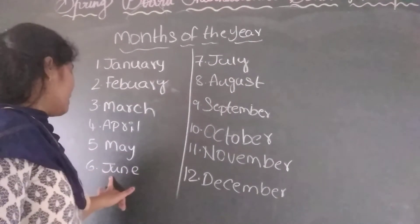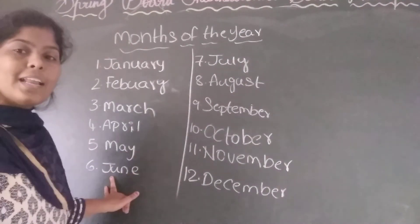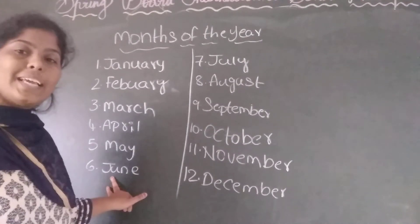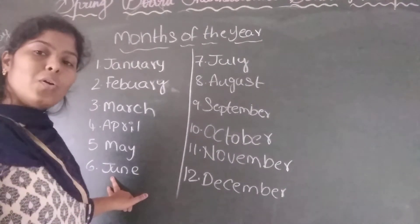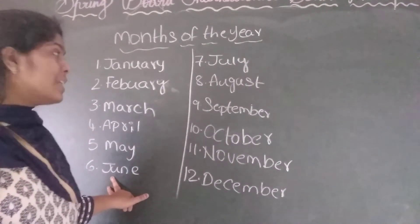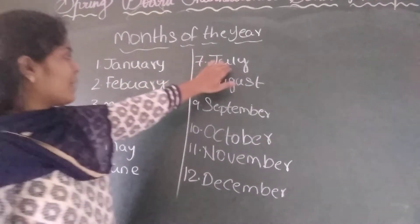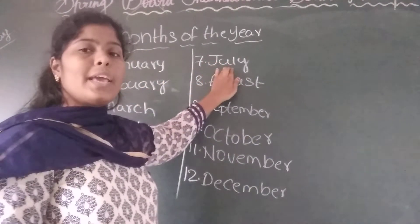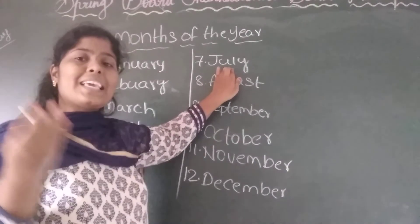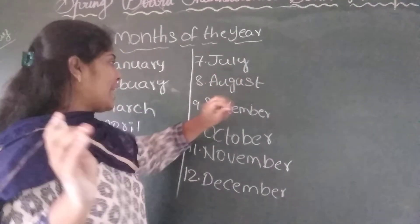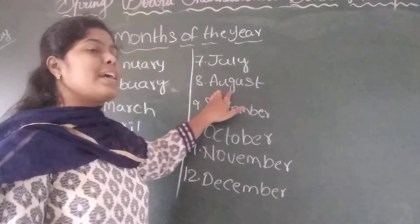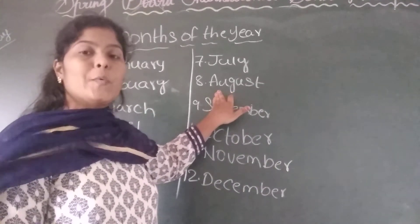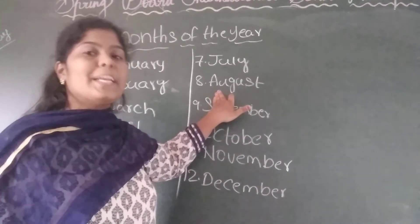June — it is again time to reopen the school. June is the time to go back to school. July is the rainy season. In July we will see more rain, heavy rains. August — in August we will celebrate Independence Day.